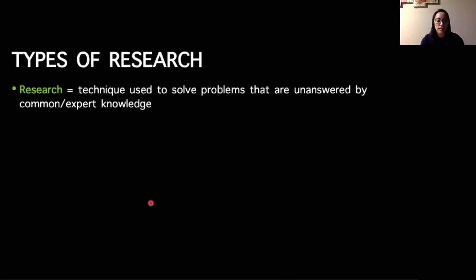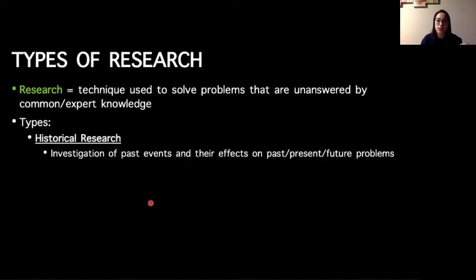Different types of research is a good place to start. Research in and of itself is a technique used to solve problems that are unanswered by common or expert knowledge. We can break this down into historical research, which looks at past events and their effects on other past events or future problems.